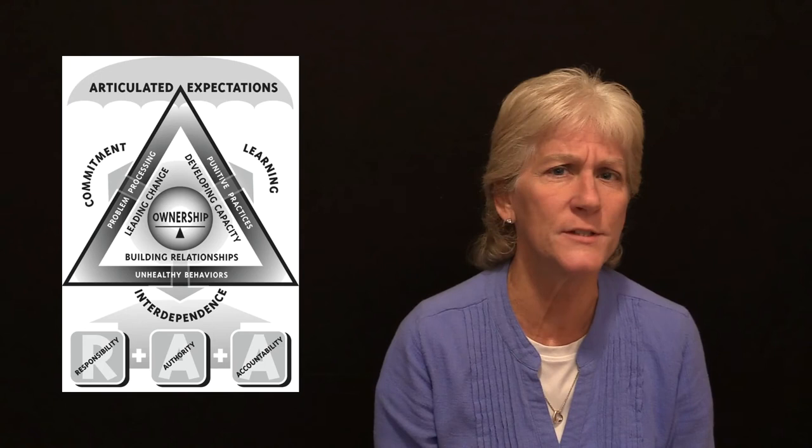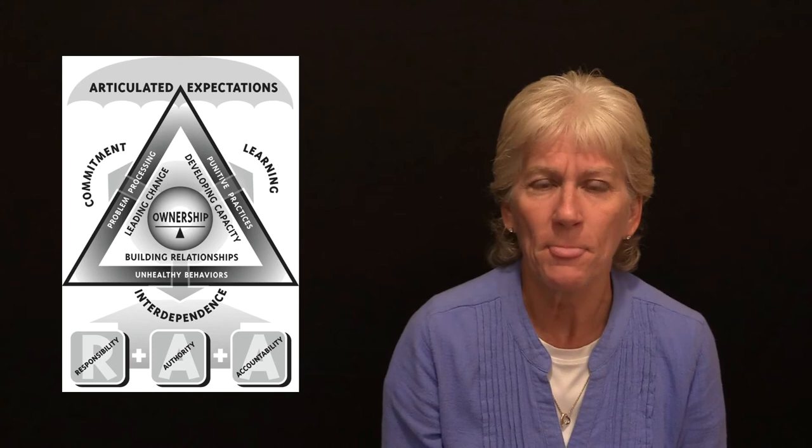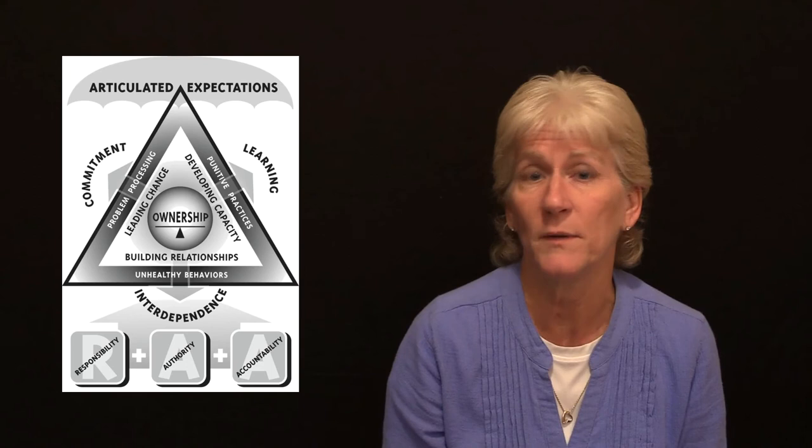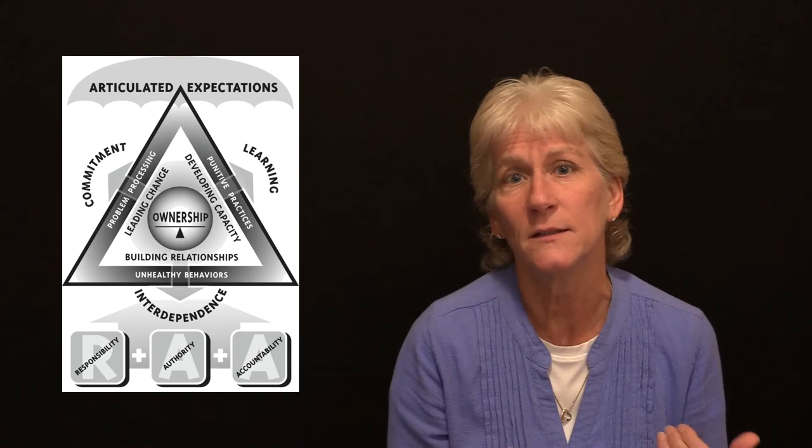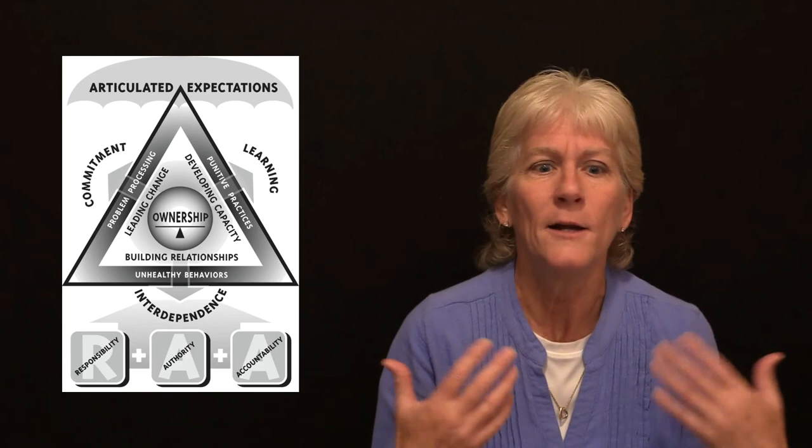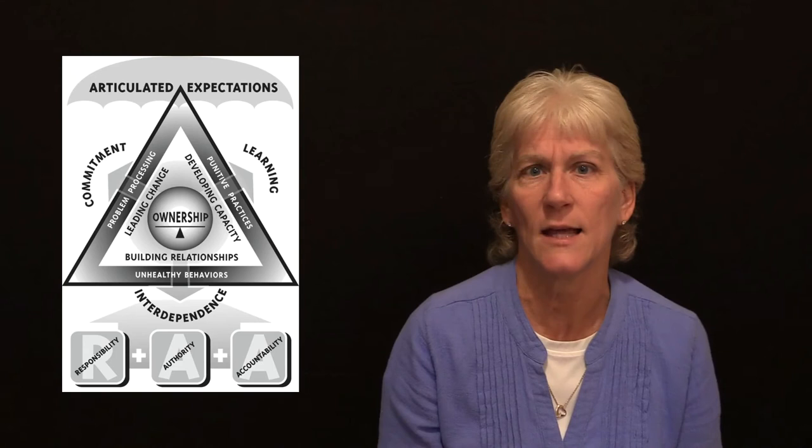Now, you notice there's some gray zones in this triangle. In the gray areas, there are some places we get stuck and we need to be aware of the gray zone. So when we get into those gray zones, we can get ourselves out. So with building relationships, we get into some unhealthy behaviors. When we're looking at developing capacity, we get into some punitive practices sometimes. And when we look at leading change, we get into some problem processing or problem recycling, and we get stuck in that.